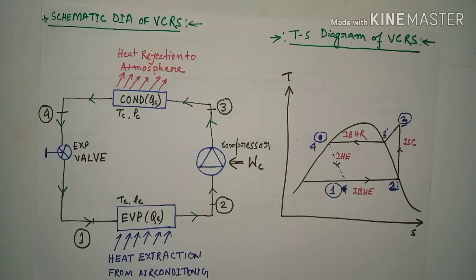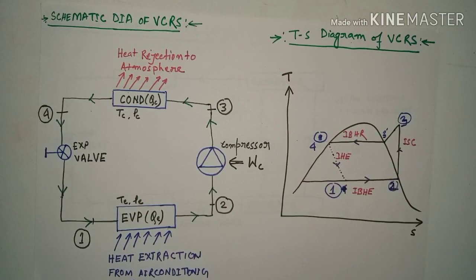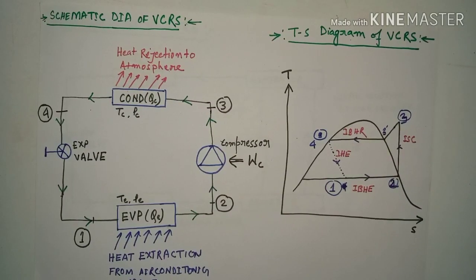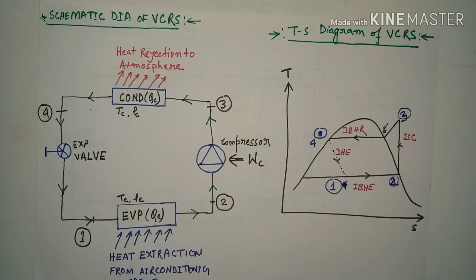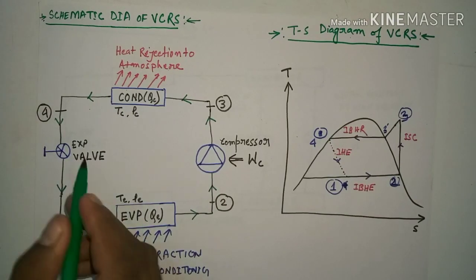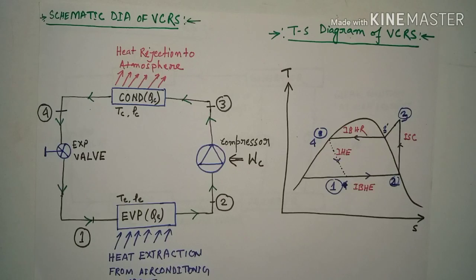Today I am basically going to tell you the main difference between the VCRS and VARS. So without wasting time, let me start with VCRS. VCRS means Vapor Compression Refrigeration System. Let me first go through the schematic diagram of the VCRS, then I will tell you the TS diagram.